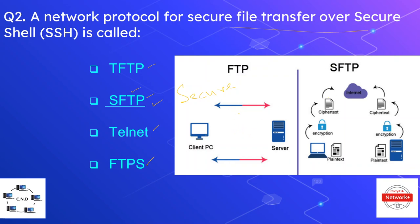This diagram shows the difference between FTP and SFTP. In FTP, the file is transferred unencrypted, while in SFTP the plain text is encrypted before exchange between the client and the server. Using encryption, the plain text is changed to cipher text when transferred from the client to the server, and the server also encrypts data when transferring it over the internet.